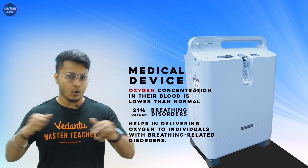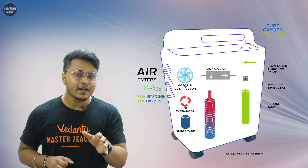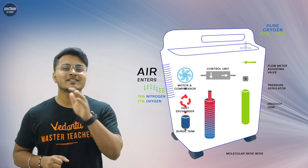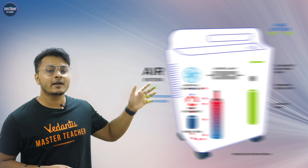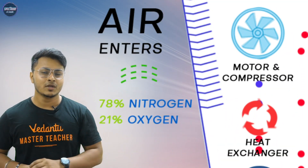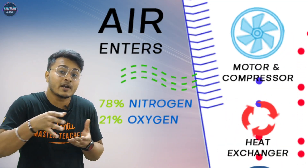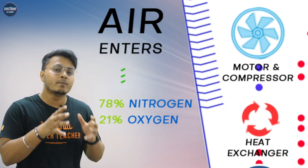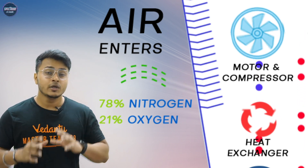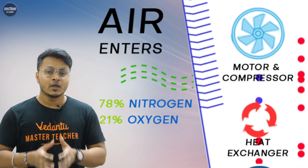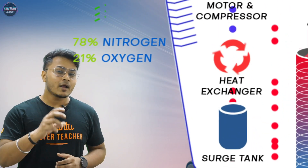Let us understand how an oxygen concentrator works by going through its key parts one by one. Pehle aata hai air inlet, jo environment ki hawa ko filter karte hue concentrator ke andar pull karta hai, jahan se it is sent to the compressor, jo is air ko compress karta hai.